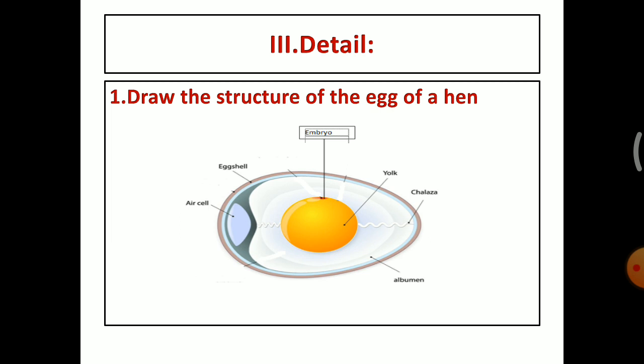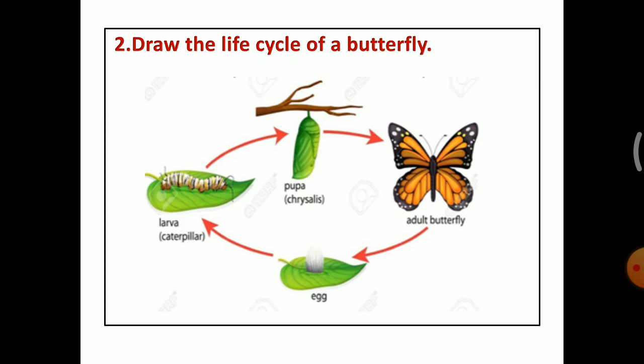The second question, draw the life cycle of a butterfly. You have to draw this picture. First you have to draw an adult butterfly, then draw a leaf. Along with leaf you have to draw eggs because the butterfly always lays eggs on the leaf. Then from the egg the caterpillar hatches out. The caterpillar eats the leaf for some weeks. Then the caterpillar spun the cocoon around it. This stage is called pupa stage.